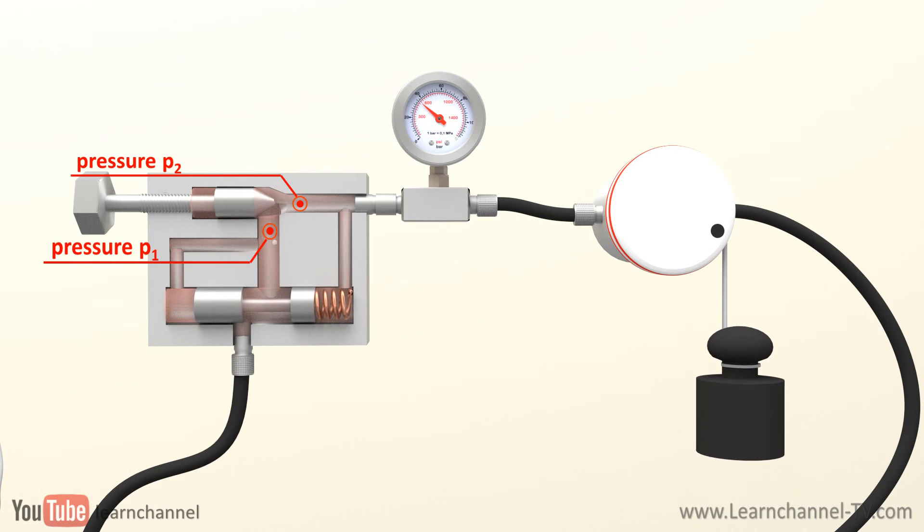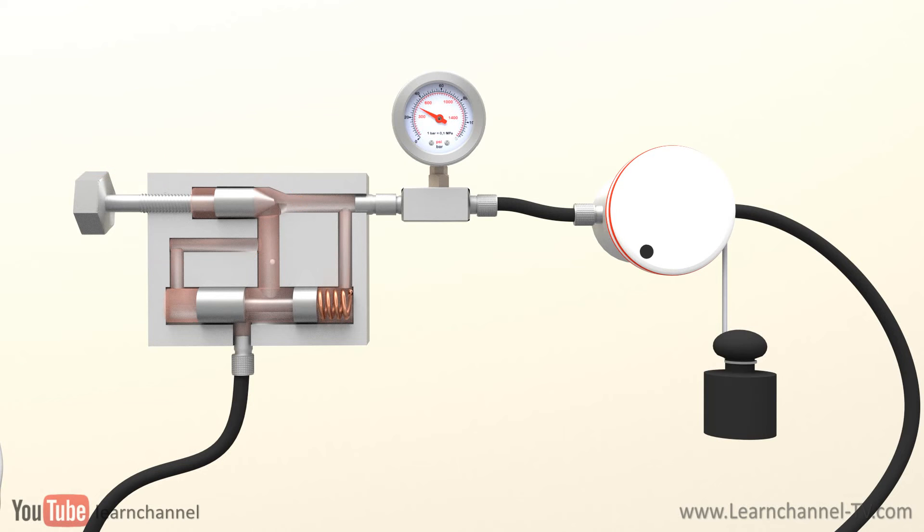Second case, the load becomes smaller, so pressure P2 decreases. Now the compensator spool closes to keep the flow rate constant.